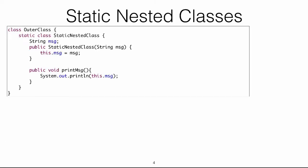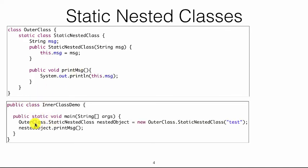For example, we have an outer class with a static nested class inside it. There is a string message field, a constructor for the static nested class, and a method inside it. To instantiate it, you write: StaticNestedClass nestedObject = new OuterClass.StaticNestedClass(). Then after you have the nested object you can call printMessage. This is just like any higher-level class — it's simply for packaging purposes.